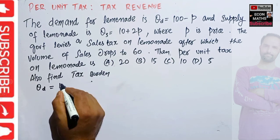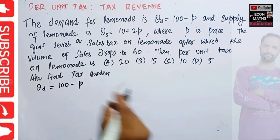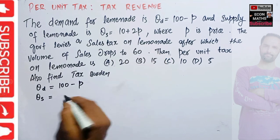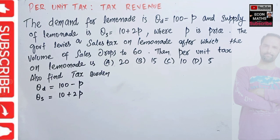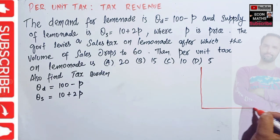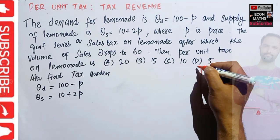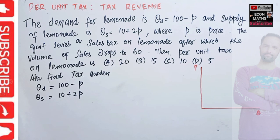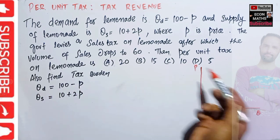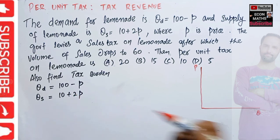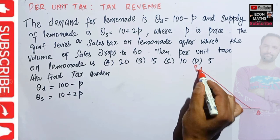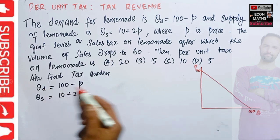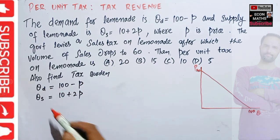We are given that quantity demanded for lemonade is 100 minus P, and quantity supplied is 10 plus 2P. First, we will find the equilibrium price and quantity before the imposition of sales tax. Let's draw a simple graph with quantity on the horizontal axis and price on the vertical axis. The demand function is a downward-sloping curve with a price intercept of 100 and a quantity intercept of 100.